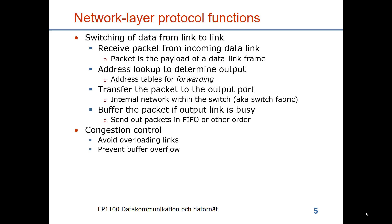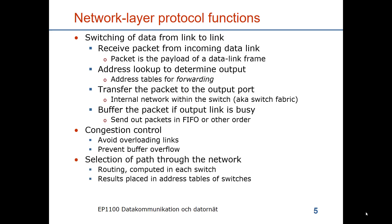A central function is also the congestion control to avoid overloading links and to prevent buffer overflow. This could be a network layer protocol function, but it could also be absent in the network protocol. The most central function for the network protocol is the selection of paths through the network, which we refer to as routing, and the routes are computed in each switch. The results are then placed in the address tables and used when looking up destination addresses of packets to determine in which direction they should be sent on what output port.